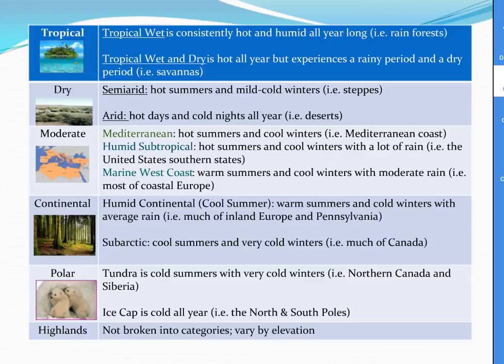Moderate temperatures can be broken down into Mediterranean, humid subtropical, or marine west coast. In the Mediterranean environment, hot summers and cool winters are the norm, as seen along the Mediterranean coast. In humid subtropical regions, hot summers and cool winters with a lot of rain dominate — you'll see this in the southern United States. A marine west coast climate is designated by warm summers and cool winters with moderate rain for most of the year, as seen in coastal Europe.